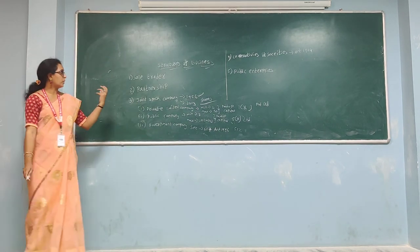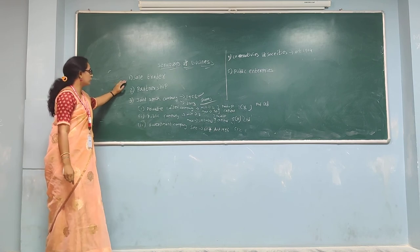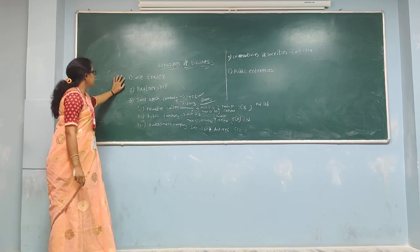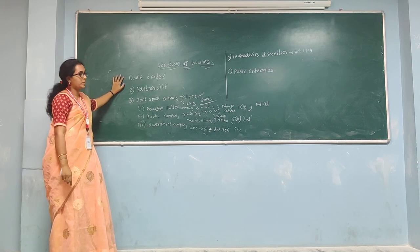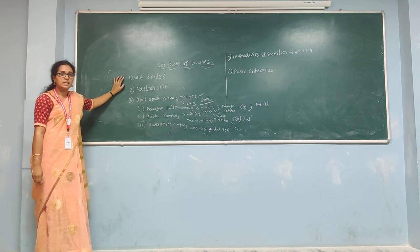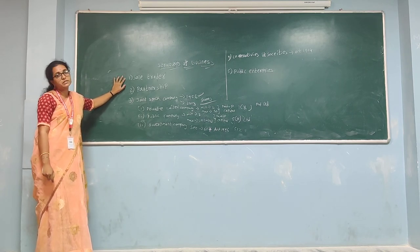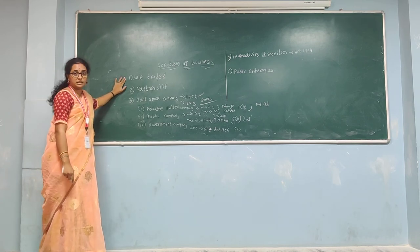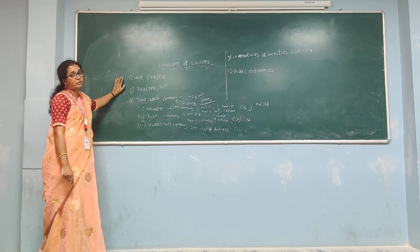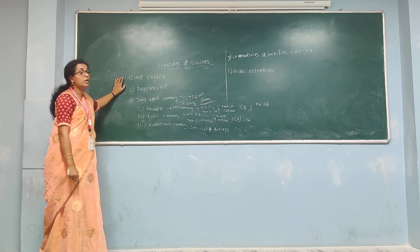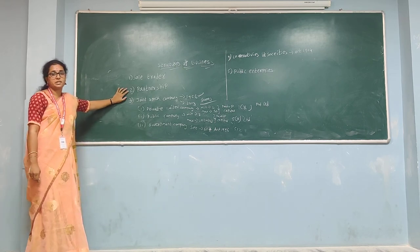Reviewing sole proprietorship: there are some advantages and disadvantages. Advantages — a single person can do the business, it is easy to start and easy to close. Disadvantages — only one person bears all responsibilities, there is no bargaining power, less capital, and competition is challenging for a single person doing the business. In partnership, two or more persons do the business.